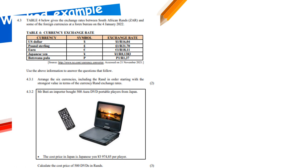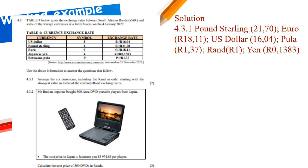From a past paper: arrange six currencies including the rand in order starting with the strongest. Using the second column (rand needed to buy one unit), the order is: pound sterling (R21.70), euro (R18.11), US dollar (R16.04), then the pula, then the rand itself, and finally the weakest — the Japanese yen.